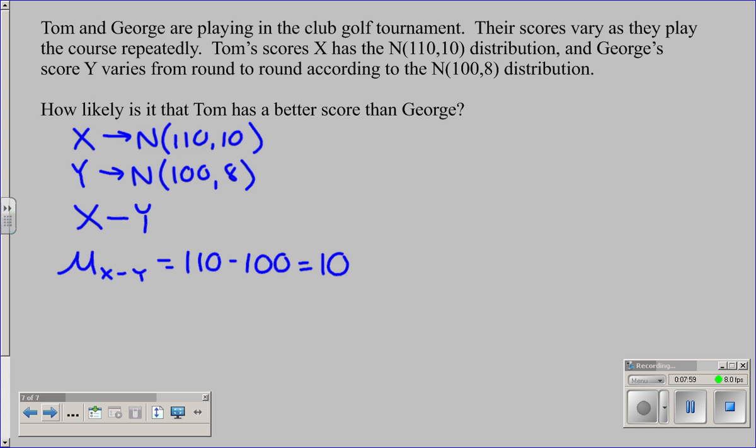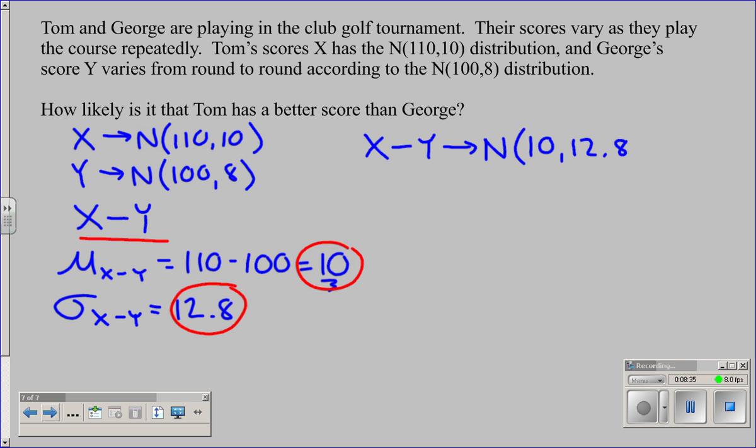The standard deviation of X minus Y, that was what I did on the last slide, that is 12.8. So I have a mean here and a standard deviation here. They are for X minus Y. And since the two original distributions were normal, this means that X minus Y will have a normal distribution with a mean of 10 and a standard deviation of 12.8.